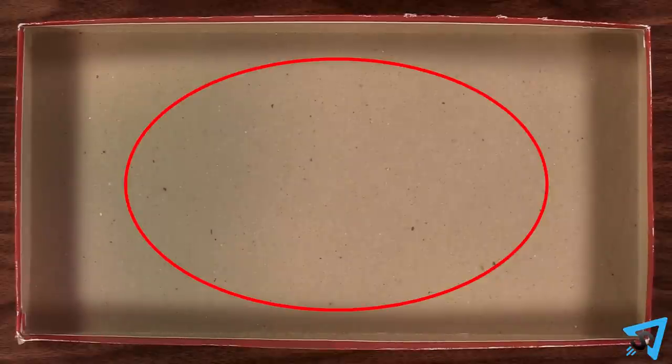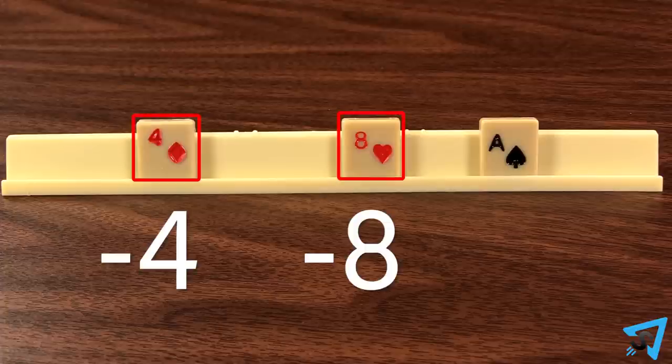Once the lid runs out of tiles, players continue playing without drawing until no more plays can be made. Then points are subtracted from players' scores for their remaining tiles. Aces count as fifteen. Then the player with the most points wins.